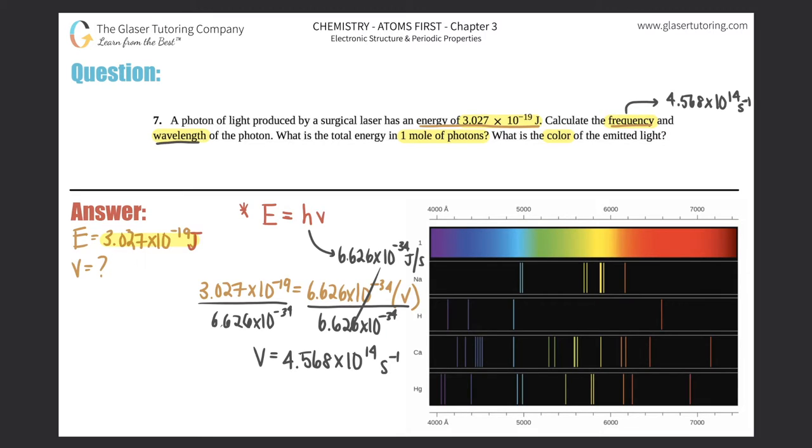So that's 4.568 times 10 to the 14th cycles of your sinusoidal wave per second. That's crazy. So this part is done. Now we've got to find the wavelength. We should know how to go from a frequency to a wavelength using C equals wavelength times frequency. C is the speed of light, which is 2.998 times 10 to the 8th meters per second.